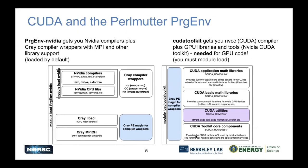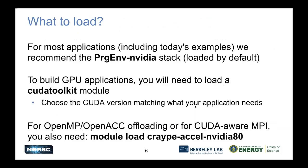You'll need to module load cudatoolkit when you're building things for GPUs. For most applications, including the examples today, we recommend using the PrgEnv-nvidia software stack, which is loaded by default when you're logging into Perlmutter. To build GPU applications, you'll also need to load a CUDA toolkit module. The default one is generally the best to use - pretty much what you want to do is choose one that has a CUDA version that matches what your application needs. The default is currently the latest available CUDA version on Perlmutter - 11.4.